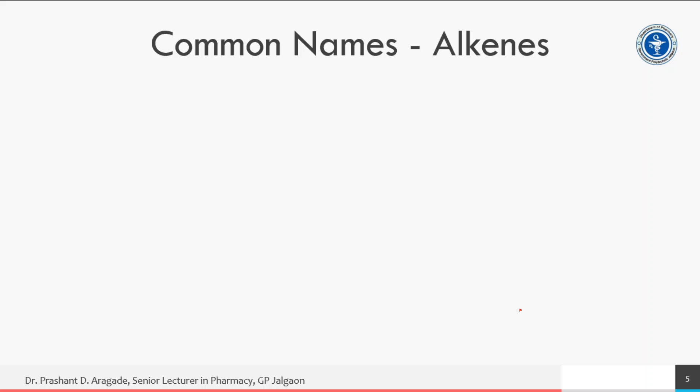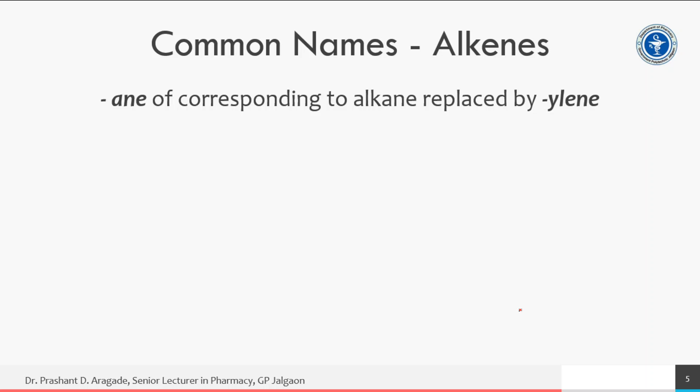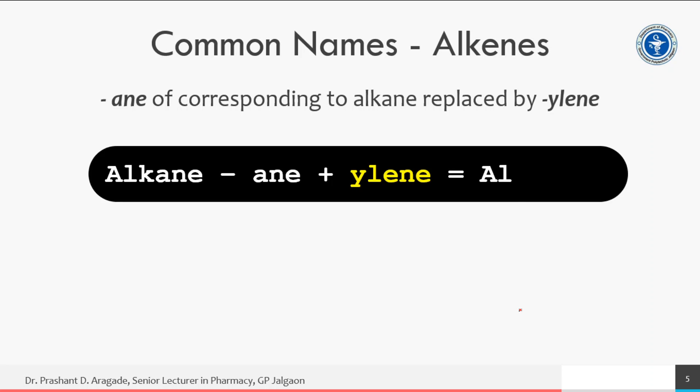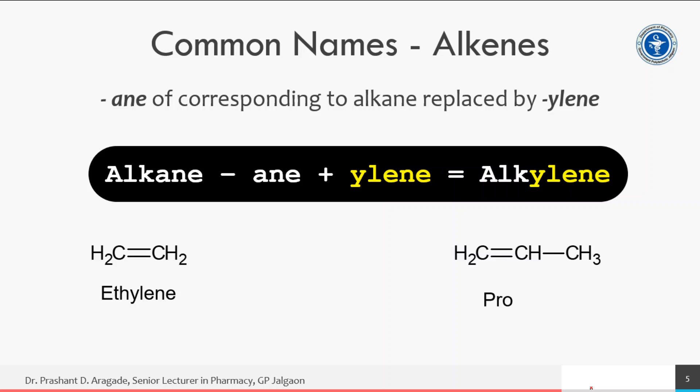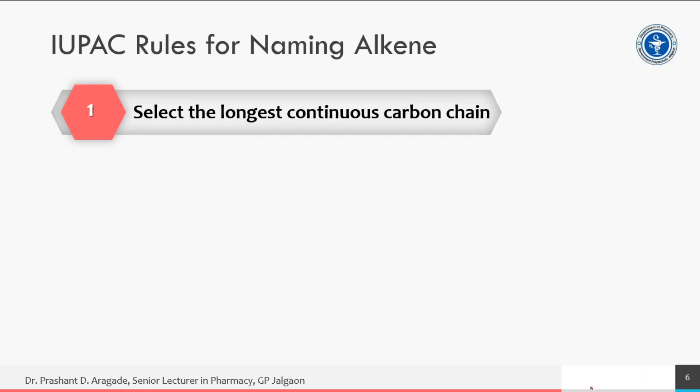Let's see how to write the common names of alkenes. You have to replace the suffix of alkane, that is '-ane', with '-ylene'. So alkane minus '-ane' plus '-ylene' equals alkylene. For example, ethylene or propylene. Now let's see the IUPAC rules for naming alkenes.